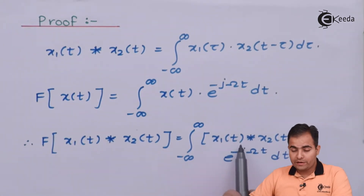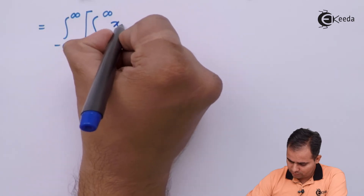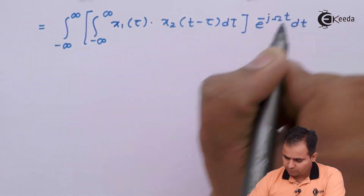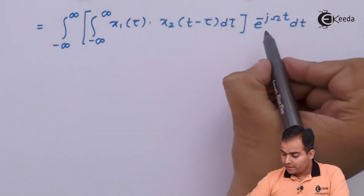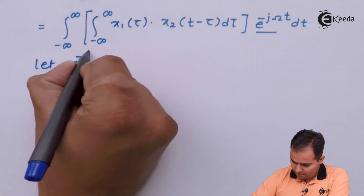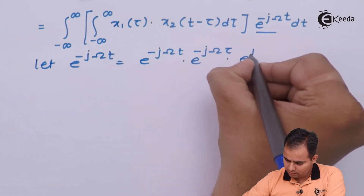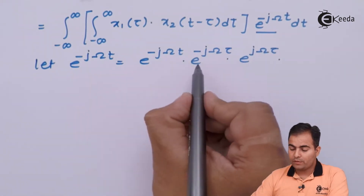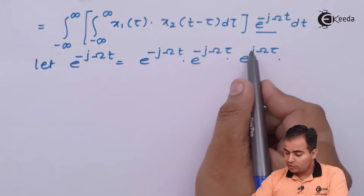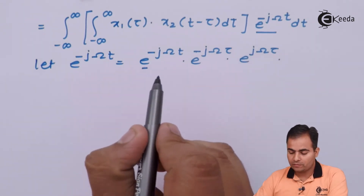Here we will use the definition of convolution. I am going to change e to the power minus jωt. Look here: e to the power minus jωτ times e to the power jωτ — if the bases are the same, the powers get added. So jωτ minus jωτ cancels, giving zero, and e to the power 0 is always 1. So we get e to the power minus jωt.